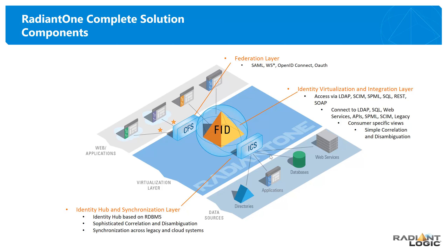RadiantLogic also offers an add-on security token service component that can generate SAML tokens for federated access and single sign-on. This layer is named Cloud Federation Service — CFS — and CFS in conjunction with FID offers a complete federated identity service, a complete identity provider deployable on-premises. You don't have to use this component for federated access; other federation servers like ADFS can leverage the FID piece as well, pointing to the FID layer as a classic LDAP directory to identify users, retrieve attributes, and augment claims.